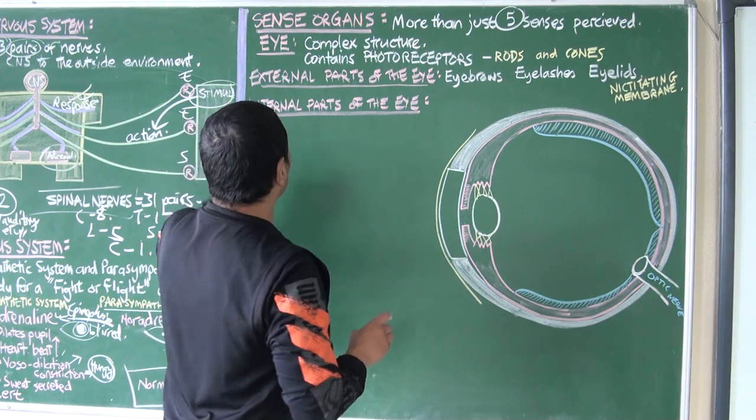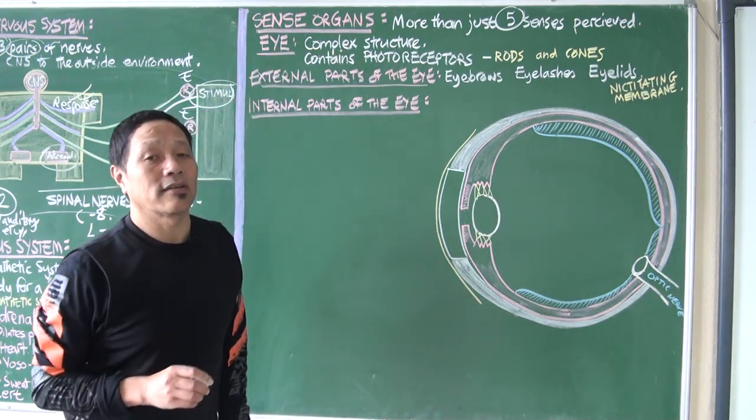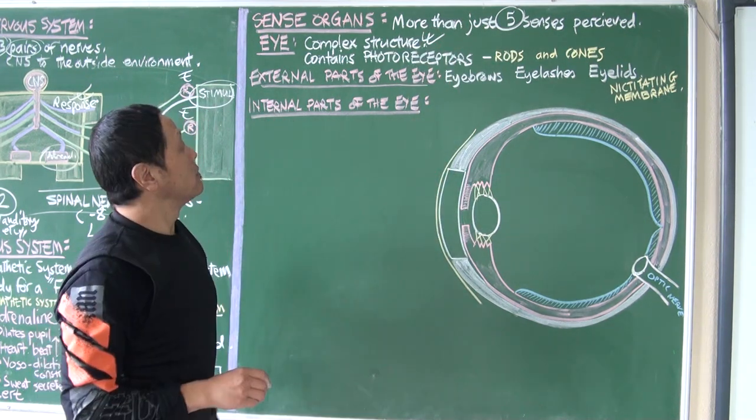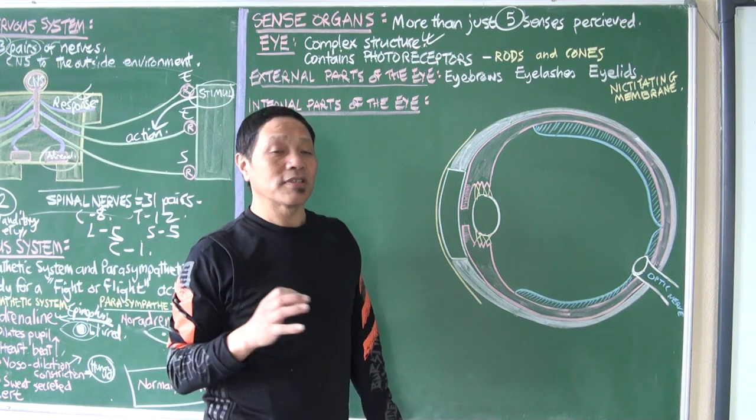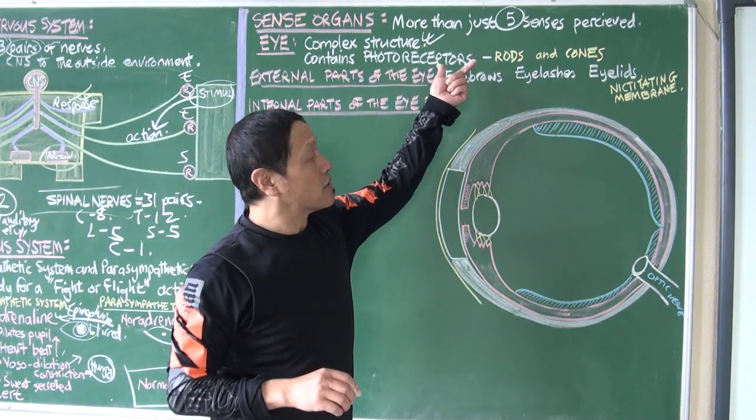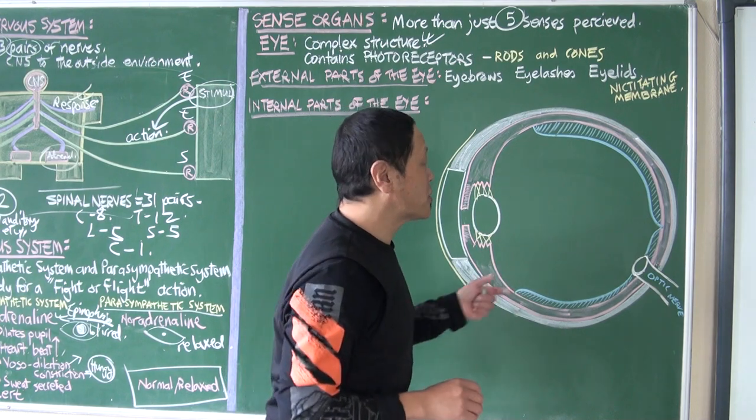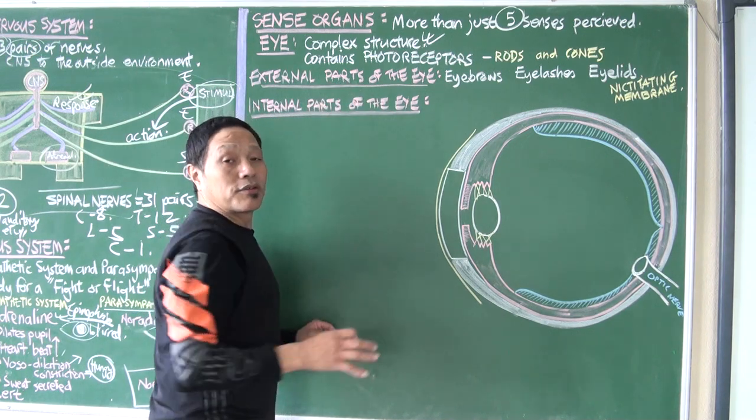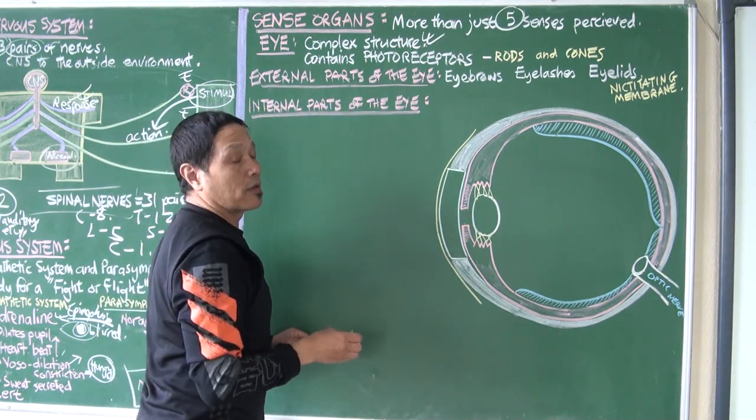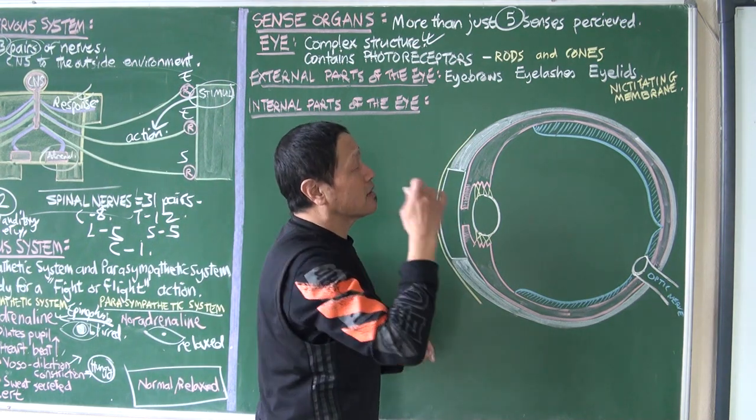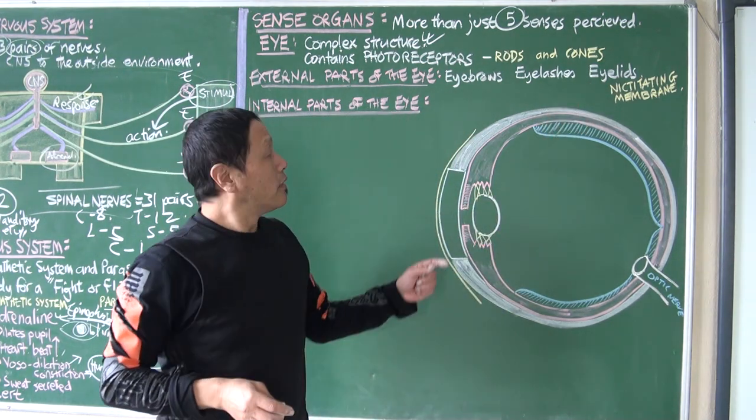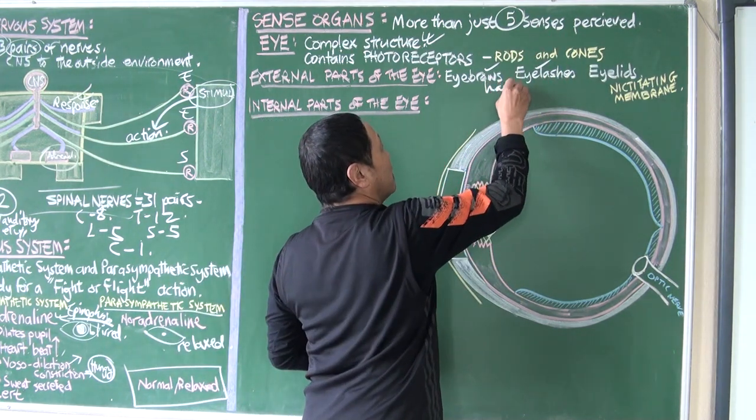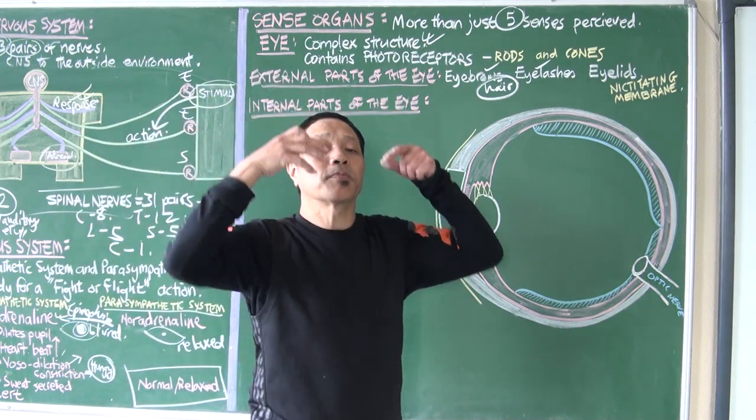We start with the eye as the first sense organ. The eye is a very complex organ next to the brain. It's very complicated but we'll try to make it as simple as possible. It contains photoreceptors - the rods and the cones which we shall discuss later on. Let's discuss the external parts of the eye.